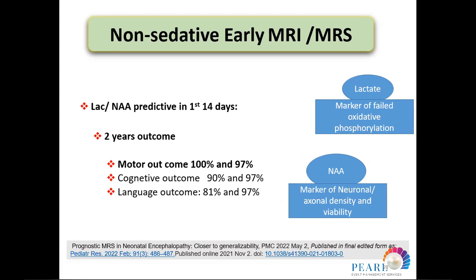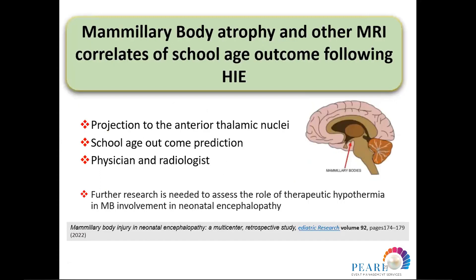Looking at one study presented by Dr. Ranikia two weeks ago at a conference — she discussed motor outcomes assessed by Bayley-3 scores and gross motor function scores. Regarding mammillary body atrophy and other MRI correlates of school-age outcomes: the mammillary bodies, projecting into the anterior thalamic nuclei, are found to be very sensitive to hypoxia. However, subjecting these cases to therapeutic hypothermia was not found to have the real impact expected. Expert radiologists are needed to properly interpret these modalities, and further research is needed to assess the role of therapeutic hypothermia on mammillary body injury in encephalopathy.